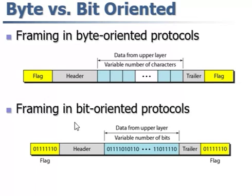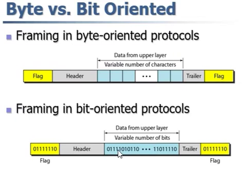Next, byte versus bit stuffing. In byte-oriented protocols, data is stored in bytes. In bit-oriented protocols, data is stored in bits — this is machine language. That is the difference between byte and bit oriented protocols.